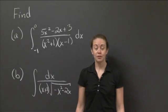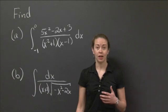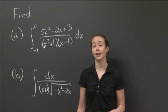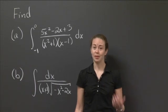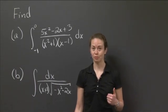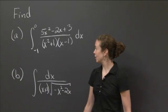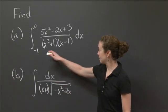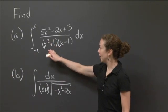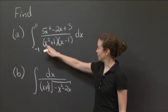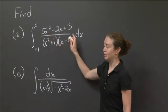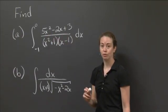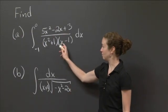Welcome back to recitation. In this video, we're going to be working on establishing the best technique for finding an integral or finding an antiderivative. For letter a, I'd like us to find an actual value if we take the integral from minus 1 to 0 of 5x squared minus 2x plus 3 over the quantity x squared plus 1 times x minus 1.